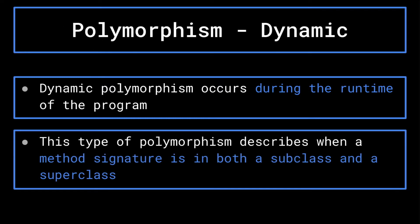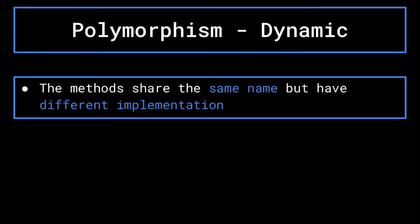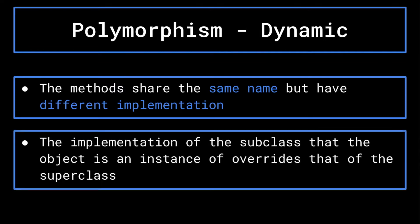This describes when a method signature is in both a subclass and a superclass. The methods share the same name and parameters, but have separate implementations. In this case, the subclass's implementation of the method overrides the superclass's. Let's go over an example.